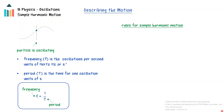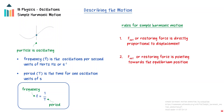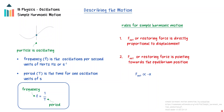Simple harmonic motion is a type of oscillation in which the net force, referred to as the restoring force, has two specific characteristics. It is directly proportional to the displacement of the object from the equilibrium position, and its direction is always pointed to the equilibrium position in the opposite direction of the displacement. That is represented by a negative sign in the proportionality statement.